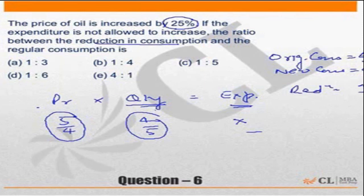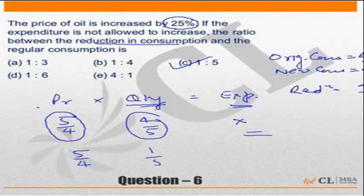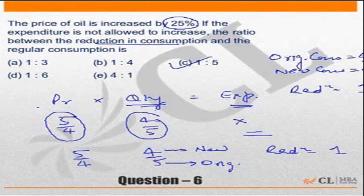So the key thing out here in this question was just to remember that since the expenditure is constant, if the price becomes 5 by 4 times, quantity will become 4 by 5 times. Quantity becoming 4 by 5 times means if the original consumption is 5, the new consumption is 4, or the reduction in consumption will be equal to 1.